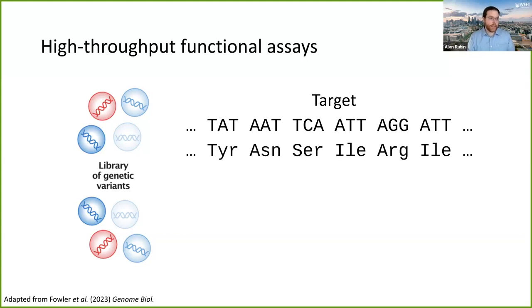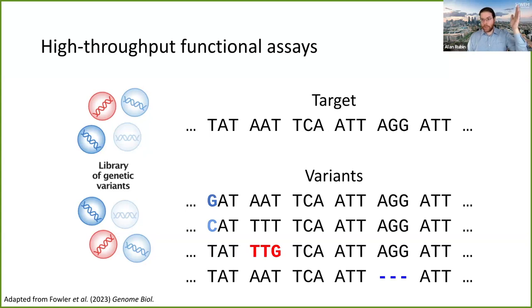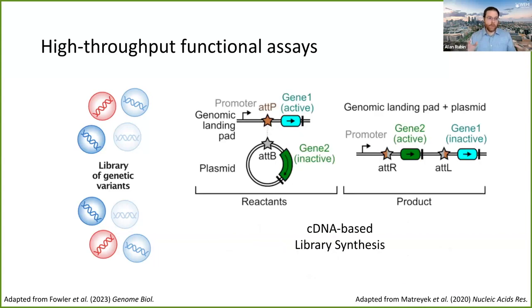Since this is a deep mutational scan doing saturation mutagenesis, we have many variants: every possible single nucleotide variant, possibly every whole codon substitution, and we can also include whole codon deletions and insertions. We get a very complex library of tens of thousands of unique DNA molecules, and each cell gets one. We can do this at the level of a cDNA cell model—take a workhorse cell line like HEK 293T—and put a landing pad construct into it that allows us to transform one of these variant cDNAs in and drive expression in the assay system.